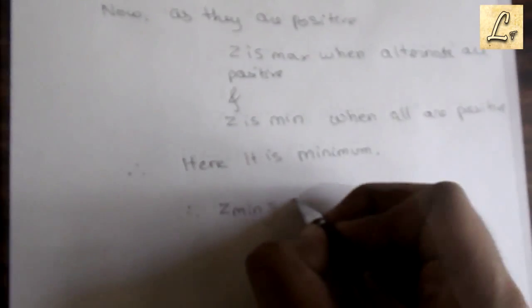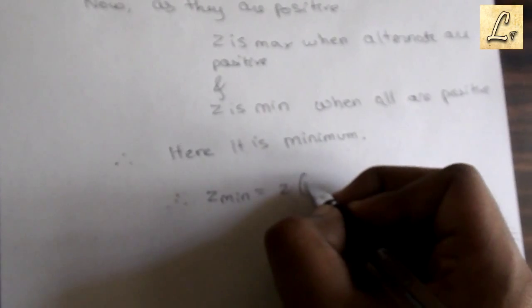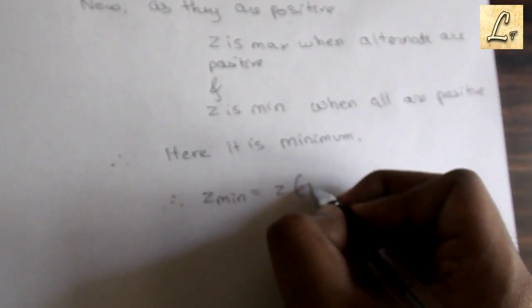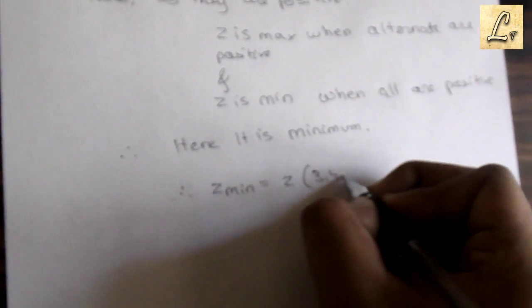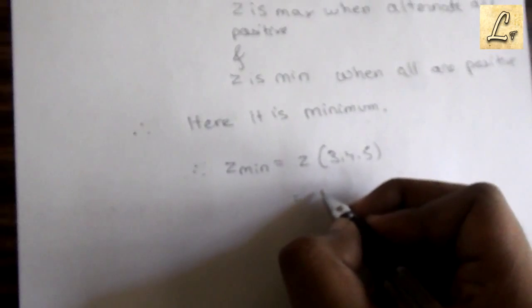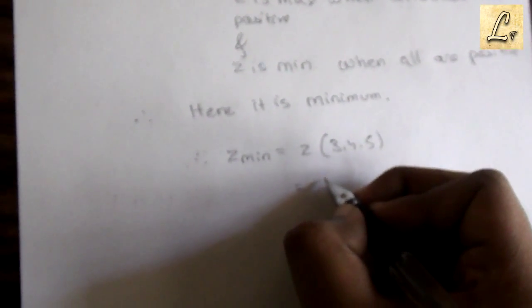So we'll write z_minimum at the stationary points x1, x2, and x3 that we found, and we'll substitute them into the original equation from the question.